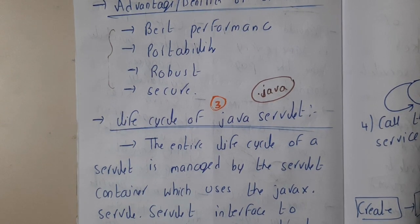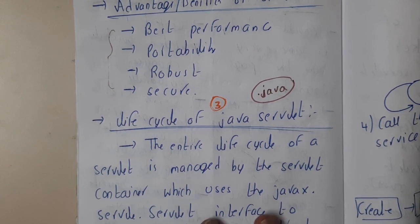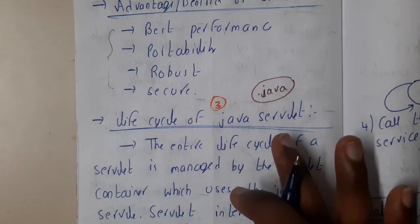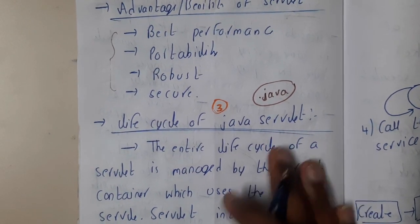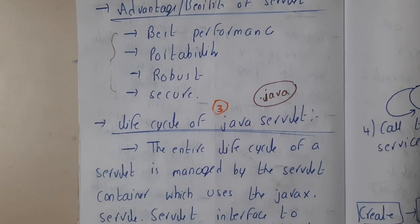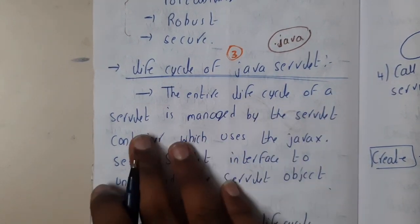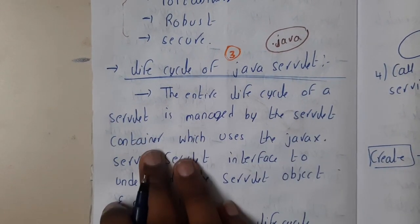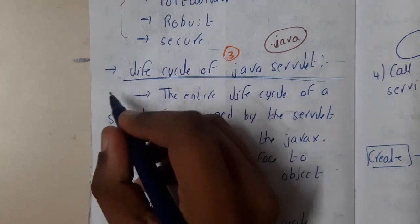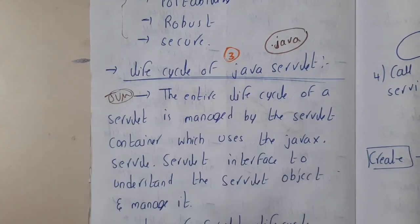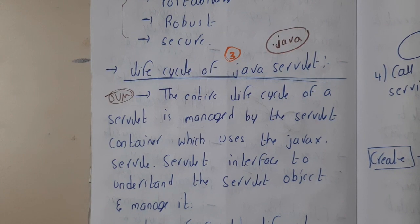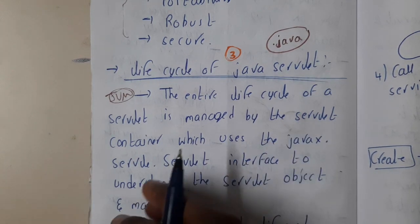In this lecture, let us go through the lifecycle of Java Servlet — how you will be starting it, how you will be initializing it, how you will be serving it, and what internally happens. These are predefined or pre-written for us. The entire lifecycle of a servlet is managed by the servlet container, which is basically your JVM — your Java Virtual Machine — on which you will be running your Java code.